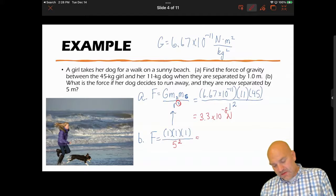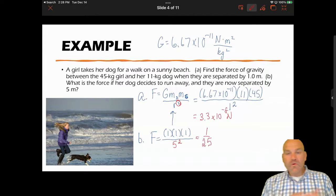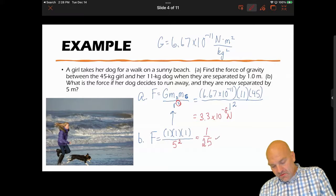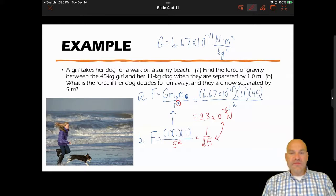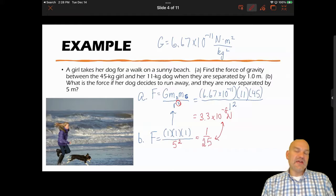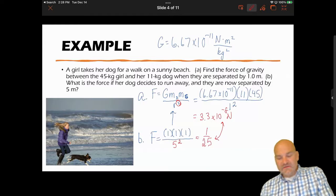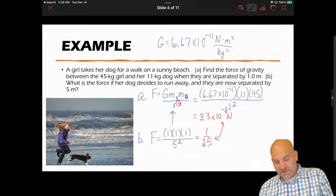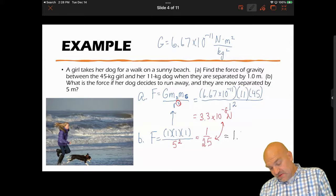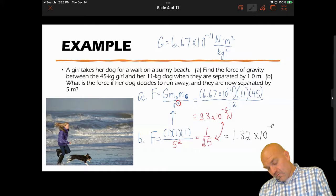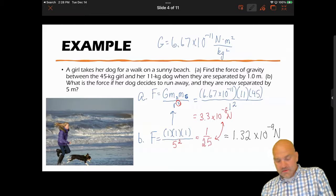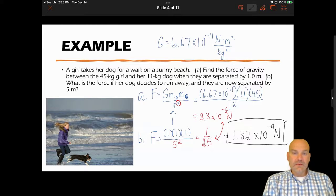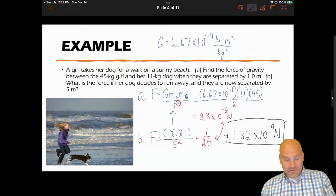So what does that mean? The force now between them is 1/25th of what it experienced before. So now all I have to do is multiply the 3.3 times 10 to the negative eighth, the answer from part A, divide it by or multiply it by 1/25th, or divide by 25, and you're going to see that the force is 1/25th times less.